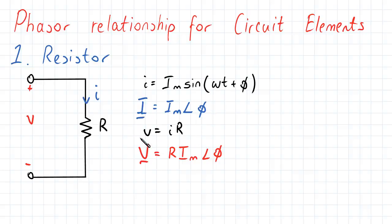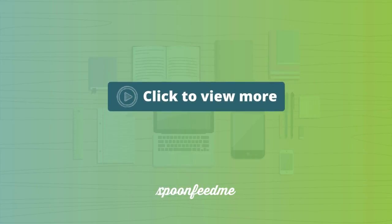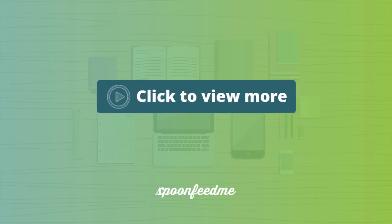Using our Ohm's law, we have V is equal to I R, which gives us V vector equals R I m at angle phi.